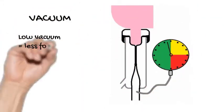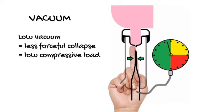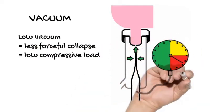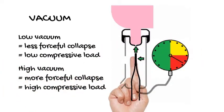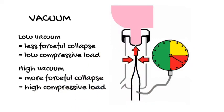The size of this compressive load is influenced by the vacuum inside the liner. The higher the vacuum, the more forcefully the liner walls are pulled together and the greater the pressure applied to the teat.